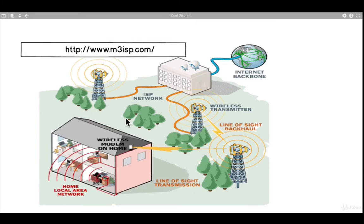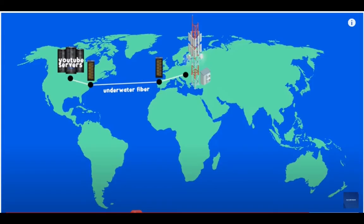This diagram shows how the internet works in your area. From here you can see the home local area network, then the wireless modem. The information is sent from the modem to the line-of-sight transmission — that's typically the towers around the area. From that tower to another tower, everything is done via wireless transmission to the ISP provider, who provides you the internet you use.